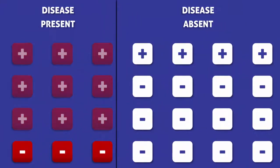The red squares with a positive sign are true positives and the white squares with a negative sign are true negatives. The rest are false test results.